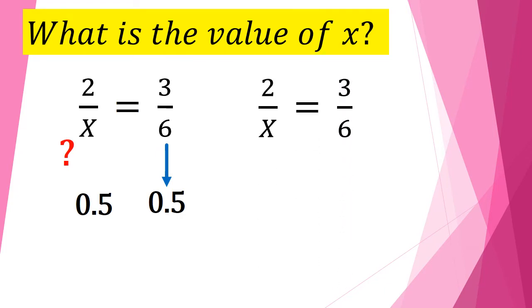2 over x is equal to 3 over 6. Since that is an equation, all you have to do is cross multiply. So you multiply x times 3, that is 3x. And you multiply the other pair, 2 times 6 is equal to 12. So 3x is equal to 12. To find the value of x, divide 3 to both sides of the equation to cancel 3. So the remaining variable on the left side is x and 12 divided by 3 is equal to 4.